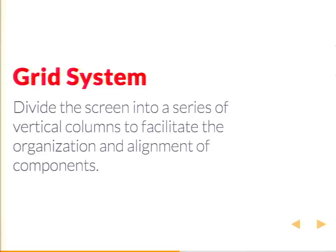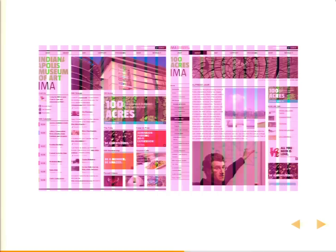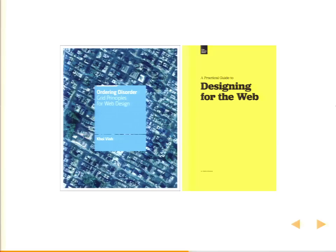Grid systems are kind of a large pattern in themselves. Essentially we divide the screen into a series of vertical columns to facilitate the organization and alignment of components. This is the Indianapolis Museum of Modern Arts — a 12-column grid. You can see how things are aligning to it. I'm not going to get into just why grids are awesome in themselves — there's plenty of that out there. Ordering Disorder by Khoi Vinh and A Practical Guide to Designing for the Web by Mark Boulton are both great — definitely check those out.